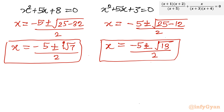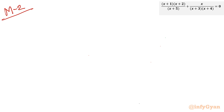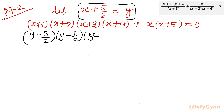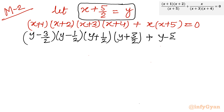Now let us consider method number 2. You can see the terms are x, x+1, x+2, x+3, x+4, x+5. I will give a substitution at the midpoint, which runs from 0 to 5, so the middle point is 5 over 2. I will set x plus 5 over 2 equal to y. Now with this substitution: x+1 becomes y minus 3/2, x+2 becomes y minus 1/2, x+3 becomes y plus 1/2, x+4 becomes y plus 3/2, x becomes y minus 5/2, and x+5 becomes y plus 5/2, all equal to 0.